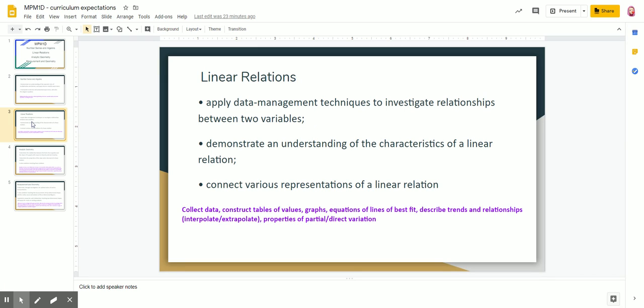Linear relations was the unit where we collected data, and then we used that data to construct tables of values and create graphs. We added lines of best fit to those graphs, and then we looked at different trends and potential relationships.